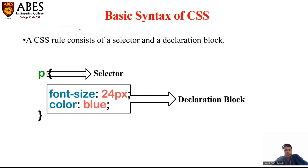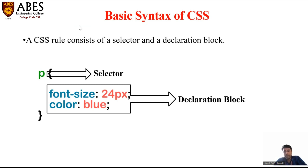So what is the selector? A selector indicates the HTML element you want to be styled. It could be any element like paragraph, heading, title, table, body, etc. And what is the declaration? The declaration is a block that can contain one or more declaration elements separated by a semicolon. For example, font-size and color are two properties separated by a semicolon. Font-size is the property and its value is 24 pixels; color is the property and its value is blue.